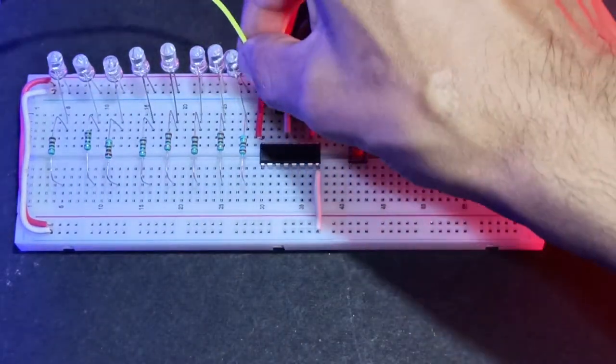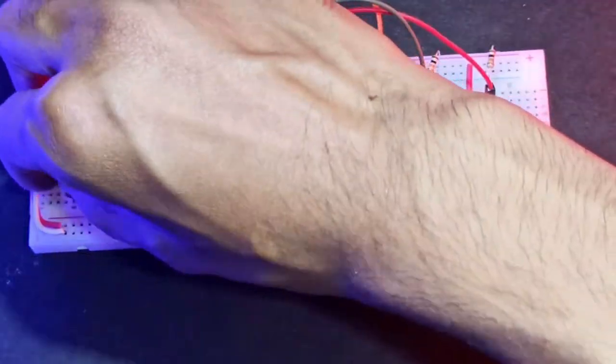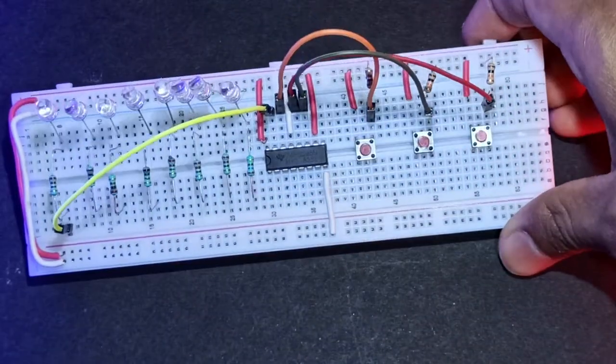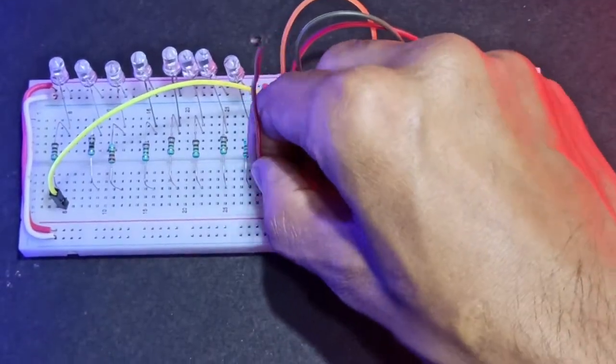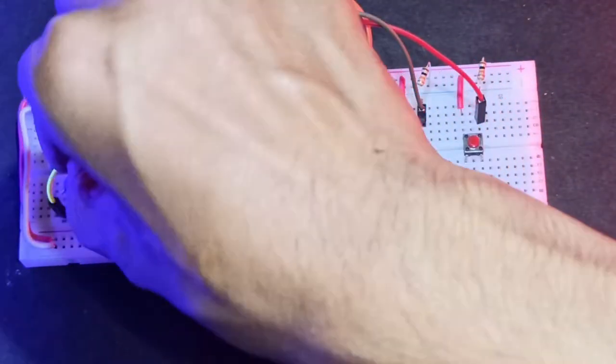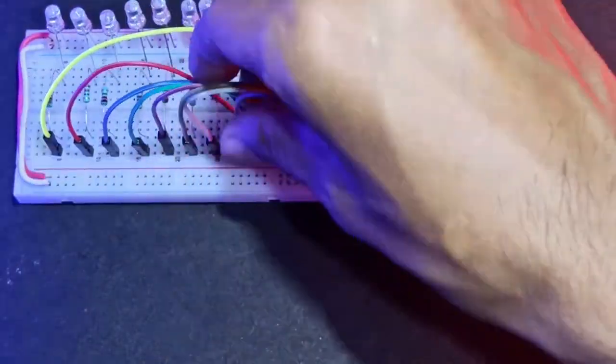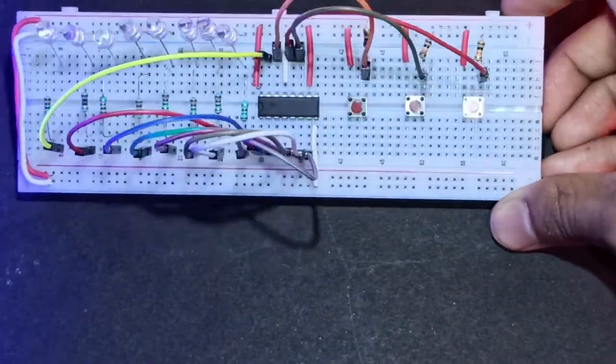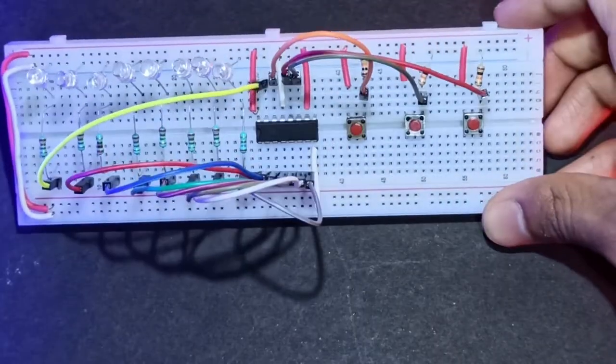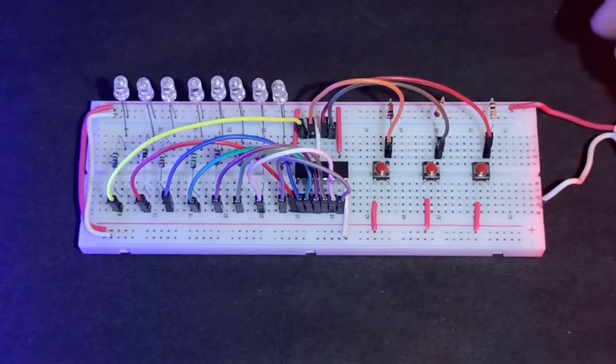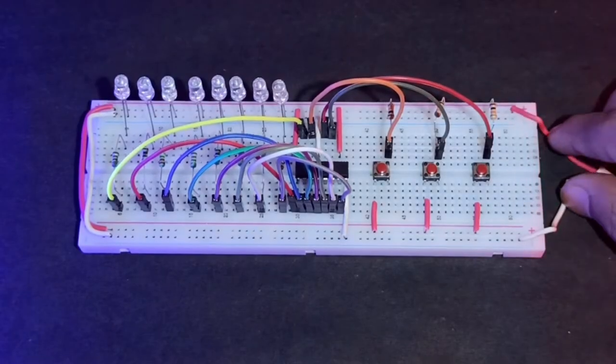Now connect the output pins to the LEDs. There are eight output pins, so connect one by one. Now connect the 5V power supply to the breadboard. Now the circuit is completed. Check out the description for the circuit diagram.